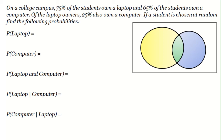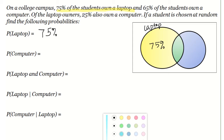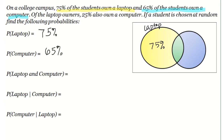The first question asks for the probability of owning a laptop. The problem states 75% of students own a laptop, so that answers our first question — P(laptop) = 75%. We put 75% in the yellow circle and label it laptop. For the probability of owning a computer, the problem tells us 65% of students own a computer, so P(computer) = 65%. We put 65% in the blue circle and label it computer.